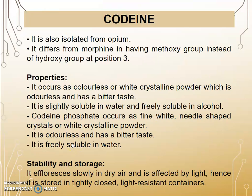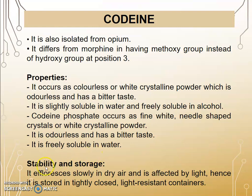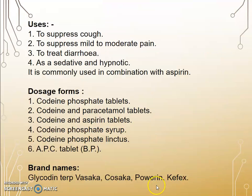Now let us start with individual monographs. The first drug is Codeine. It is isolated from opium. It differs from morphine in having a methoxy group instead of a hydroxy group at position 3. Physical property: it occurs as a colorless or white crystalline powder which is odorless and has a bitter taste. It is slightly soluble in water and freely soluble in alcohol. Codeine phosphate occurs as fine white needle-shaped crystals or white crystalline powder. It is odorless with a bitter taste and is freely soluble in water. Stability and storage: it effloresces slowly in dry air and is affected by light, hence it is stored in a tightly closed, light-resistant container.